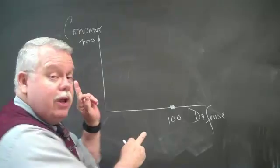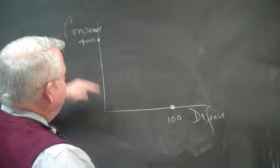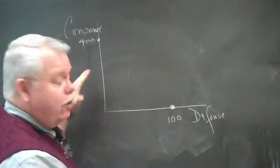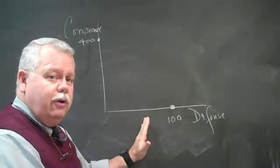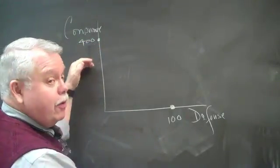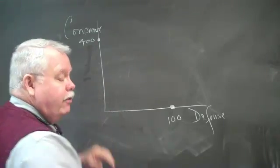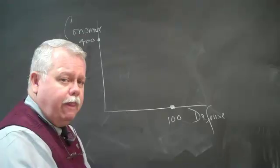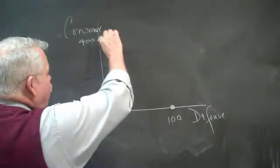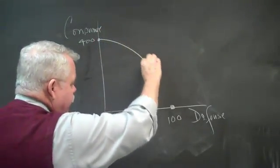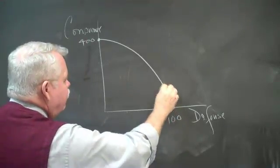We probably don't want to be at either extreme, but we start asking, well, if I have less consumer goods in order to produce some defense goods, how much do I have to give up of consumer goods for each additional unit of defense goods? What happens is we wind up with a relationship that's reflected with this curved line.